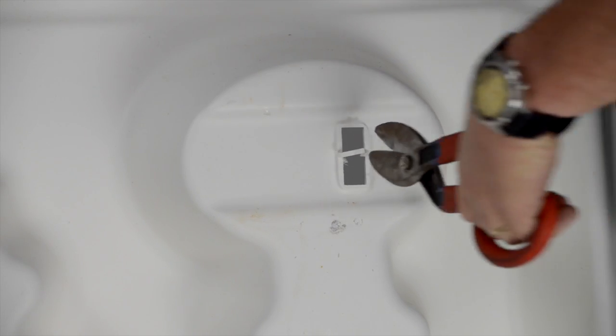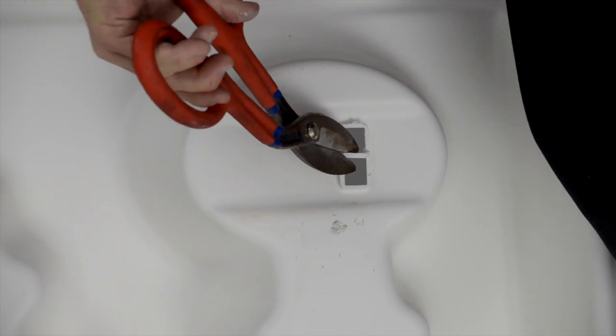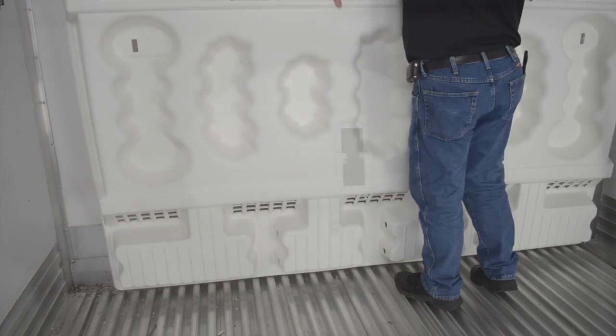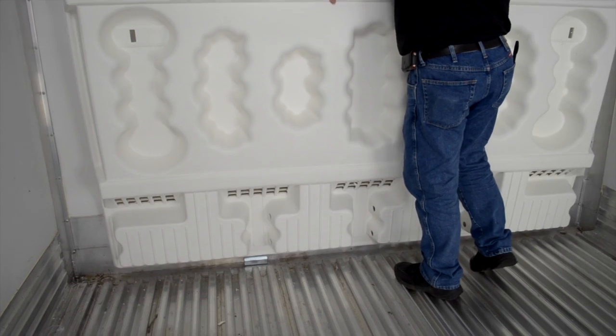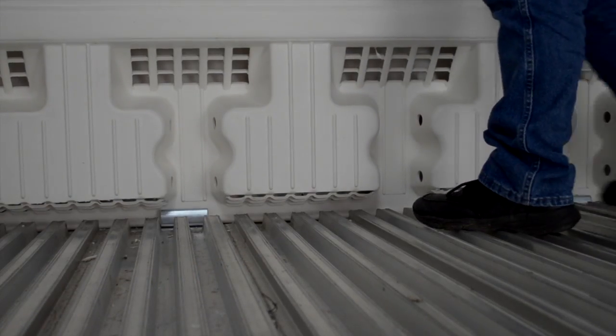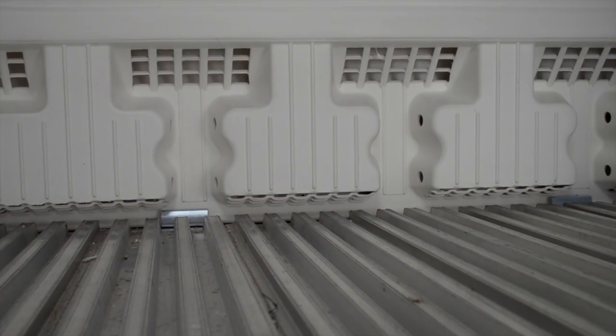Locate the two cutouts on the bottom section and cut away the tabs. Place the lower bulkhead section into the two bulkhead support brackets and position bulkhead against the front wall of the trailer.